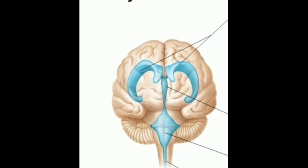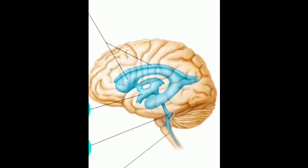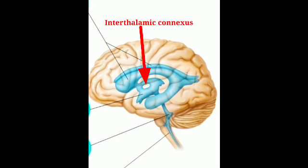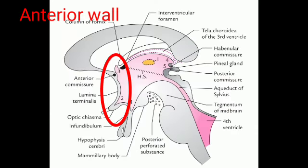The third ventricle has a roof above, a floor below, and two lateral walls on either side. The two thalami — right and left — are usually connected by a band of gray matter called the interthalamic connexus or interthalamic adhesion. This interthalamic connexus passes through the third ventricle to connect the right and left thalami, which are located on either side of the third ventricle.